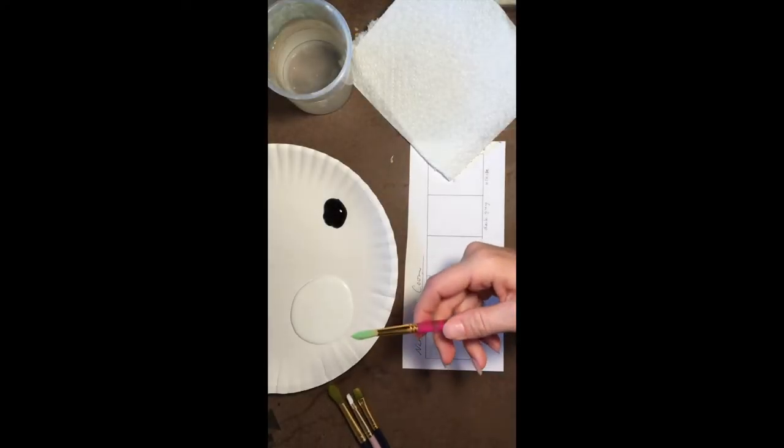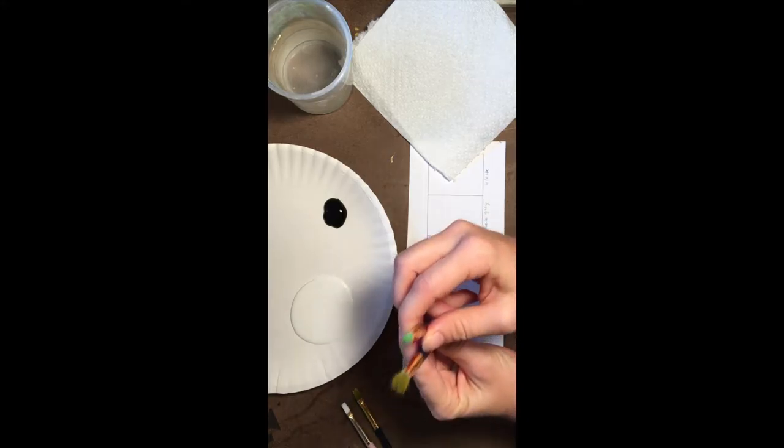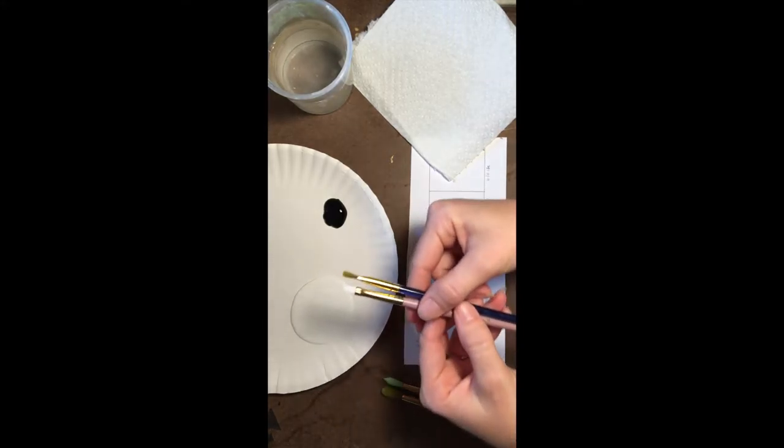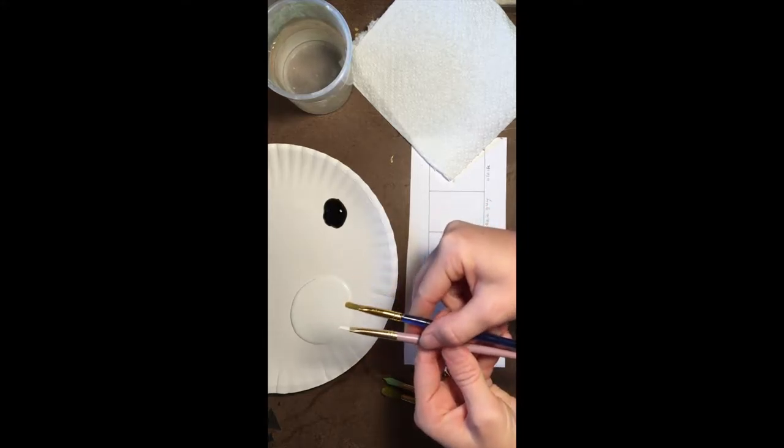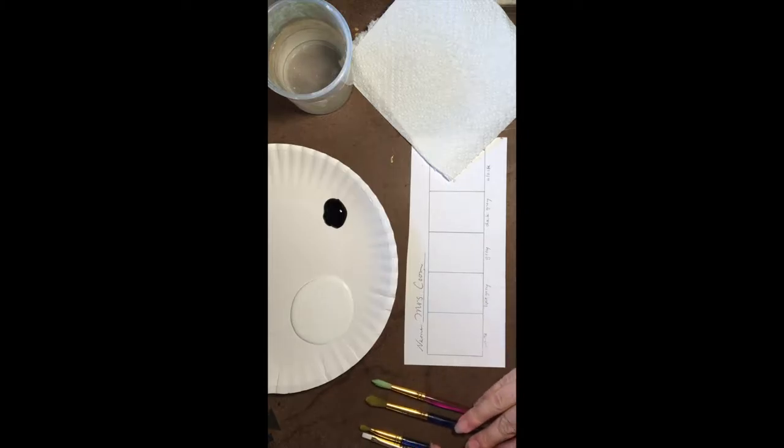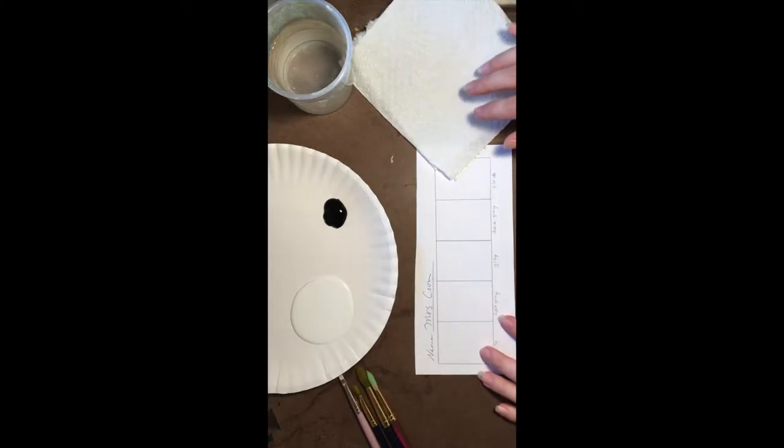We've got a couple of different types of brushes. These are called round brushes because their tips are rounded, and then we have flat brushes. It's kind of a personal preference or depends on what you're doing. You can experiment and trade with your neighbors and see which kind of brush you like the best.